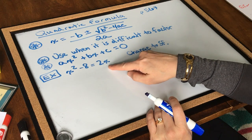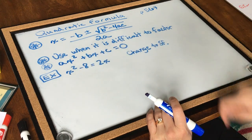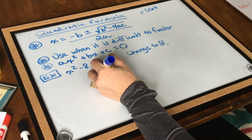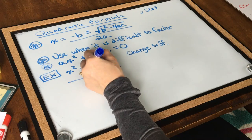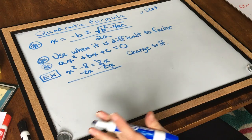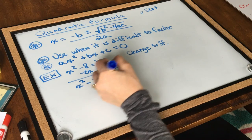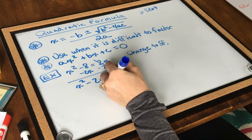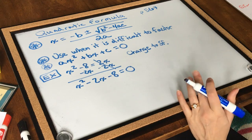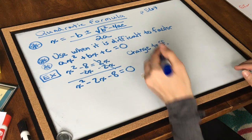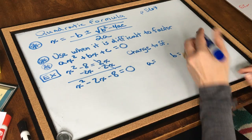The 2x is on the wrong side of the equation, so I have to play the game of switcheroo. Since it's positive, I'm going to subtract 2x from both sides, and now I have standard form: x squared minus 2x minus 8 equals 0. Let's figure out what a, b, and c are.